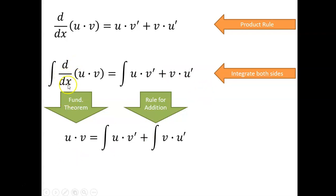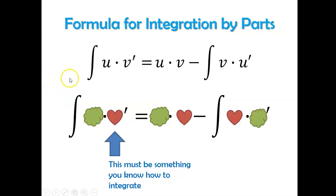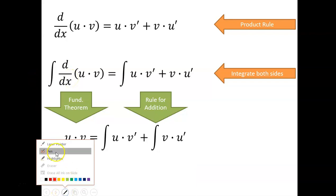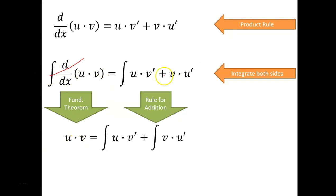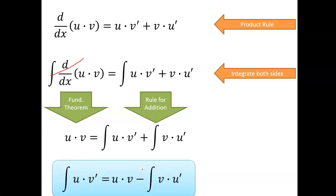What we're trying to do here is back up the product rule. What you see in front of you is very simply the product rule: if you take the derivative of a product uv, you land on u times v prime plus v times u prime. So the next thing we do is integrate both sides. On the left-hand side, I have the integral of a derivative — and by the fundamental theorem, the integral and derivative cancel each other out, leaving just the product uv. Over here it's simply the rule for addition, so I can break this into two integrals. And then I isolated the integral of u·v prime to the other side, giving me: the integral of u·v prime equals uv minus the integral of v·u prime. This is the formula for what we call integration by parts.